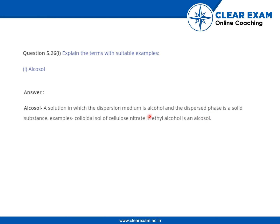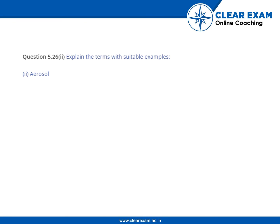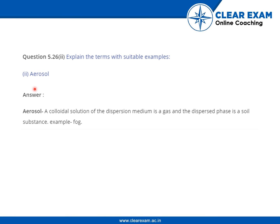As you know, a colloid has two parts: the dispersed phase and the dispersion medium. When the dispersion medium is alcohol and the dispersed phase is a solid substance, these two mix together and form a colloid known as an alcosol. So the dispersion medium is alcohol and the dispersed phase is solid — together they form an alcosol.